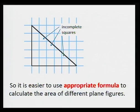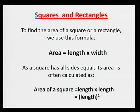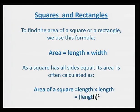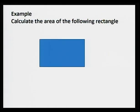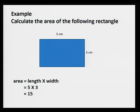Let's start with squares and rectangles. To find area of a square or rectangle, we use this formula: area is equal to length times width. As a square has all sides equal, its area is often calculated as area of a square equal to length times length, equal to length squared. Like in this rectangle, which has a length of 5 cm and a width of 3 cm, the area is length times width equal to 15. But what about the unit?